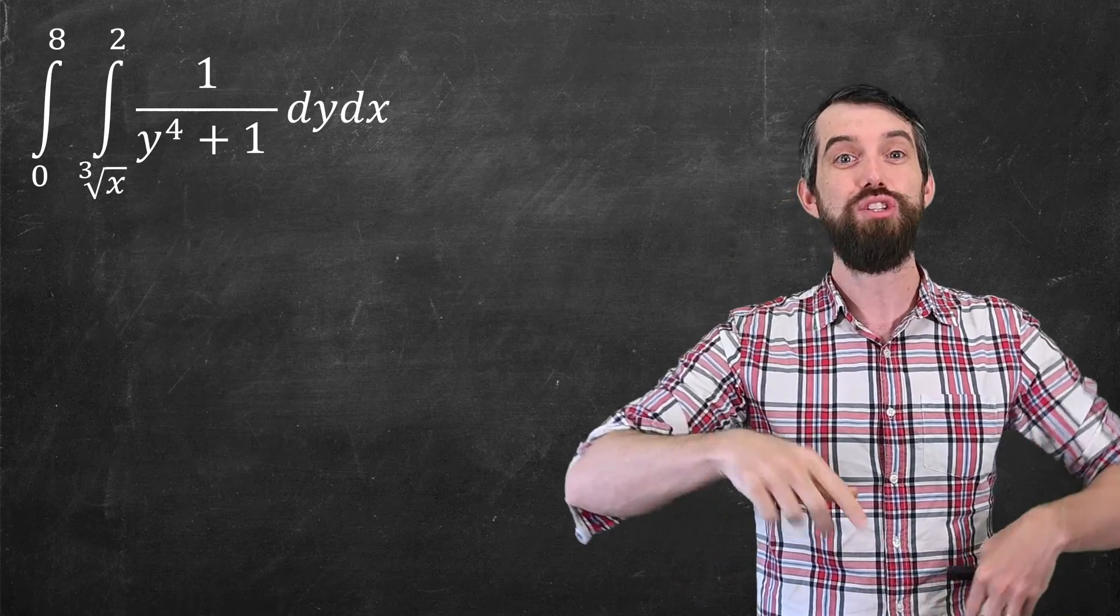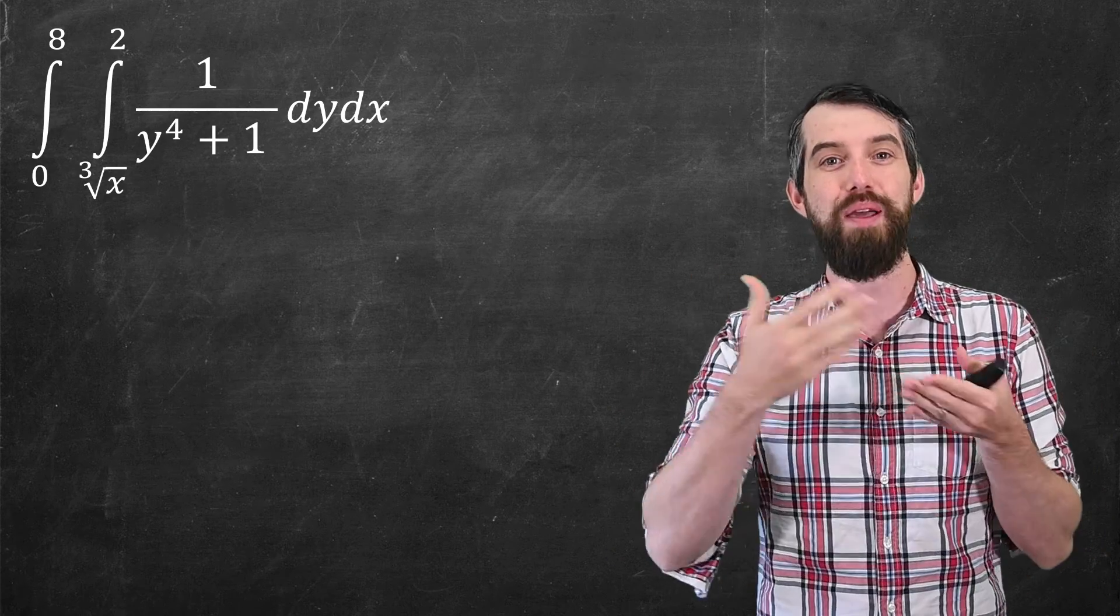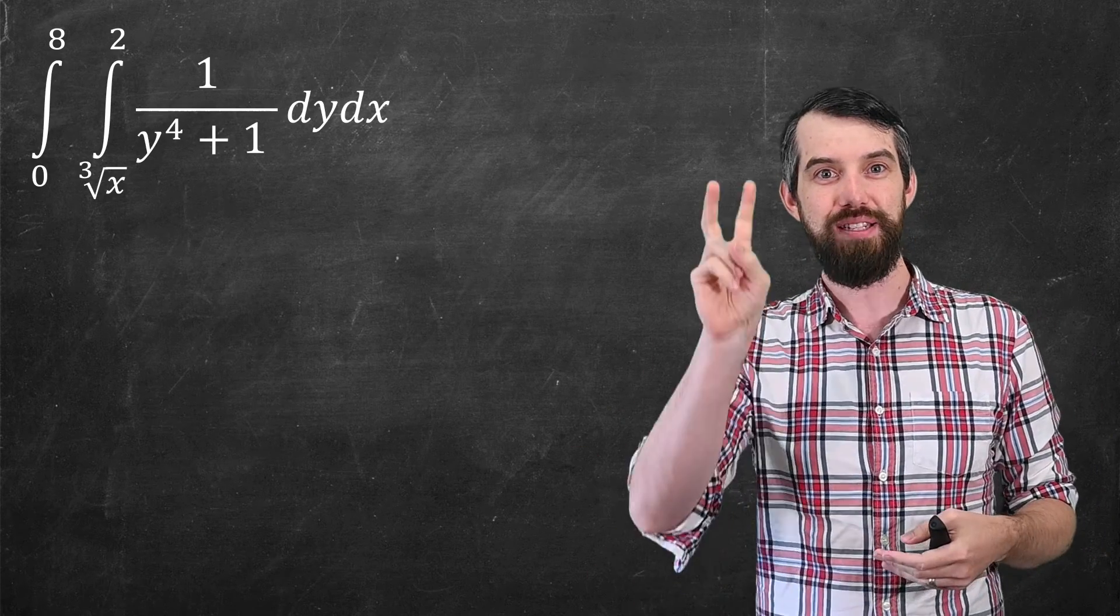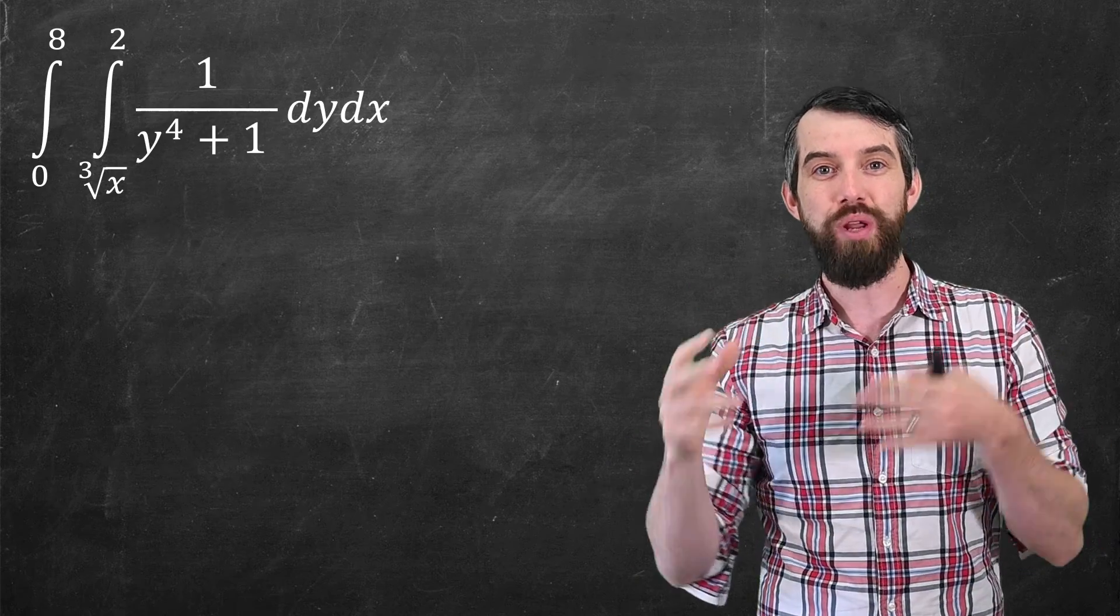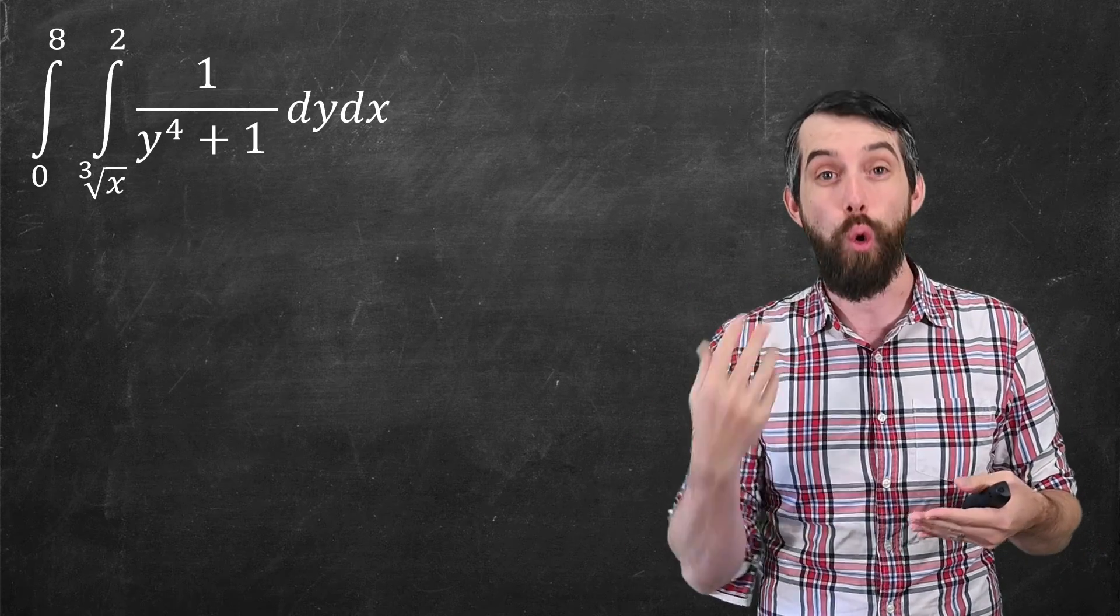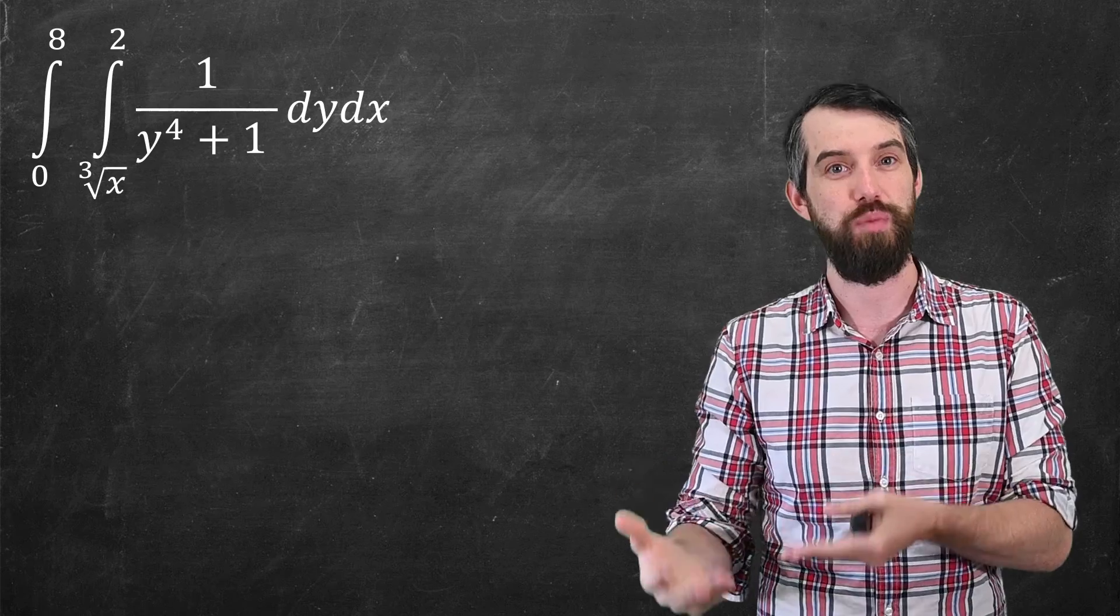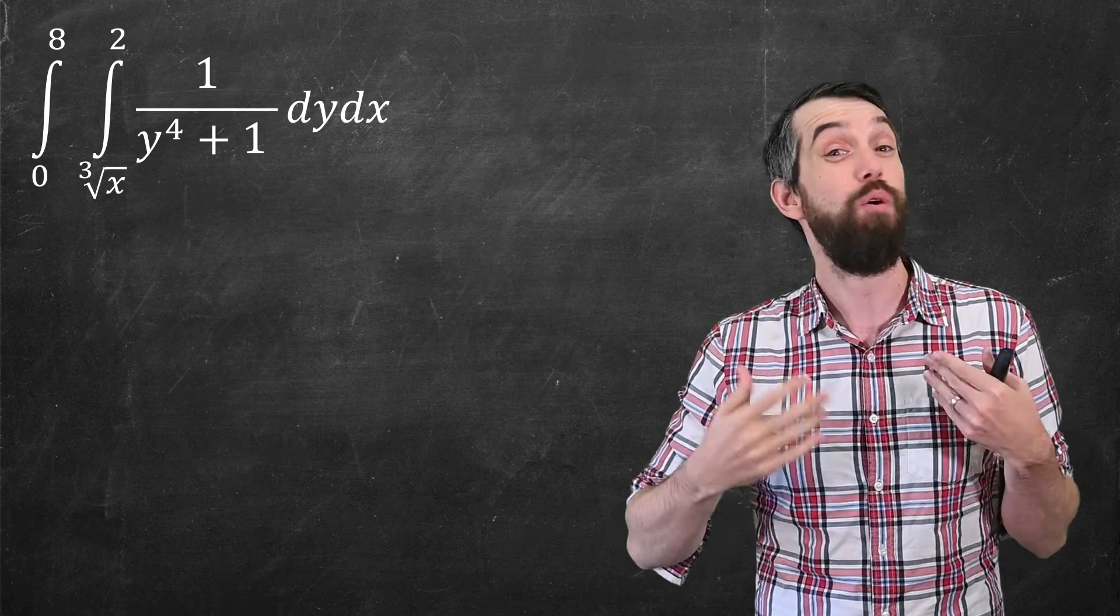First, I'm going to try to interpret what the region that is implied by these limits of integration are. And then secondly, I'm going to rewrite that integral with the order reversed by looking at the region that we just determined. And hopefully, that will be easier for us to integrate.